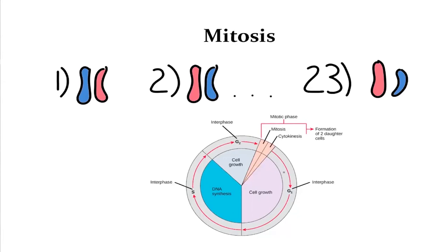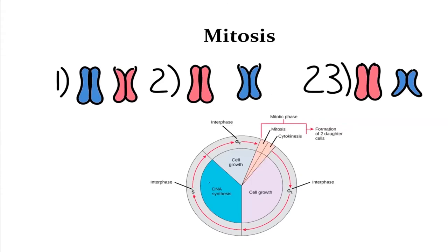In the G1 stage, the cell is growing and getting larger, and other organelles duplicate — the only thing not duplicating here is the DNA. That happens in S phase, when DNA duplicates. After duplication, we now have copies of each of the pair of chromosomes for all 23 pairs. You can see two exact copies of each chromosome — we call these sister chromatids, and they are held together by a protein complex called a centromere.